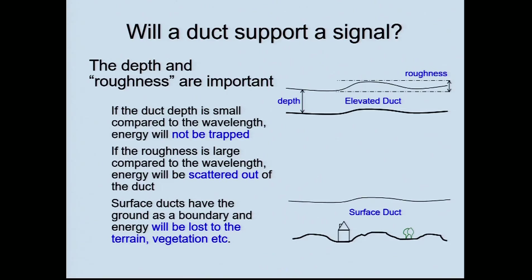A little more about whether a duct will support a signal — it depends on your wavelength. This explains the roughness: how much the duct moves up and down. Ducts tend to follow the terrain to some extent. If you look at the Earth from high up, it's actually pretty flat — even the big hills we see are actually quite small obstacles compared to the atmosphere and the propagation distances. If the roughness is large compared to the wavelength, the energy is scattered out. That means the higher the frequency, the more likely it is to be scattered out. Also, if the ground is the lower boundary, energy gets lost to terrain and vegetation.